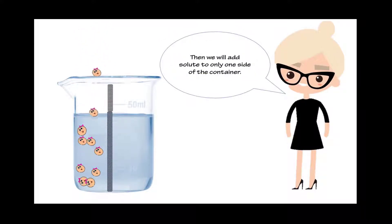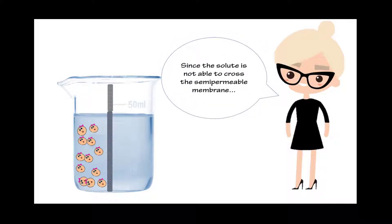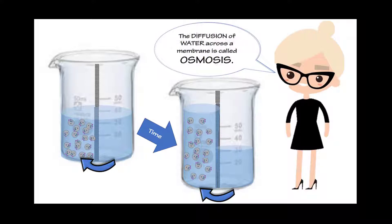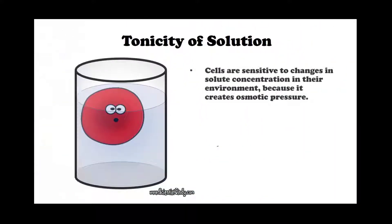This time, we add a semipermeable membrane to the container of water, and we'll add solute to one side. This solute is not able to cross this membrane. Since the solute is not able to cross the semipermeable membrane, water will move across the membrane in the direction to dissolve the most solute. The diffusion of water across a membrane is called osmosis.